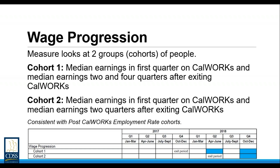Cohorts are defined by the quarter of exit. So cohort one is all individuals who left CalWORKs in the fourth quarter of 2017. To find median earnings for each cohort in each period, all EDD-reported earnings will be compiled and then a median amount will be identified as the data point for that specific cohort and time period.